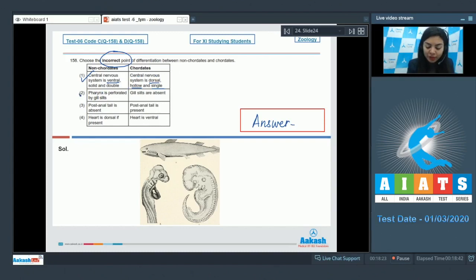Option 2: Pharynx is perforated by gill slits in non-chordates, whereas gill slits are absent in chordates. This is an incorrect point, students. The chordates show the presence of these slit-like structures in the pharyngeal region or pharynx, called pharyngeal gill slits. So these are absent in non-chordates, but present in chordates. So this is incorrect. This should have been here and this should have been here.